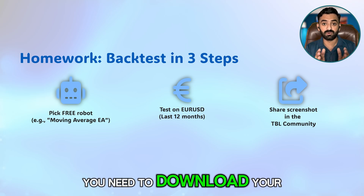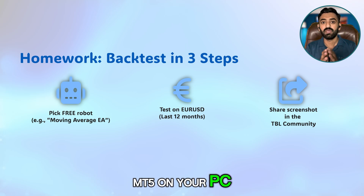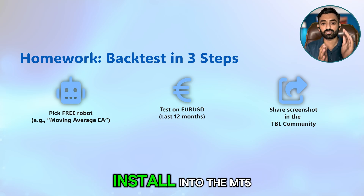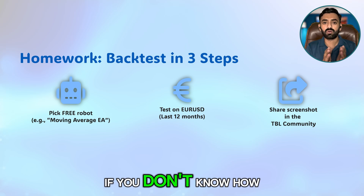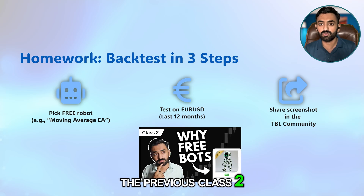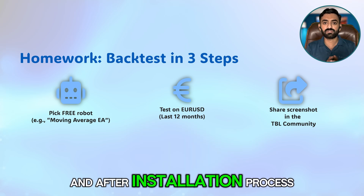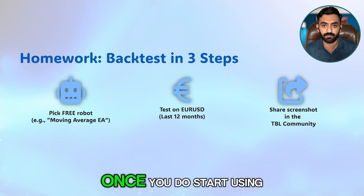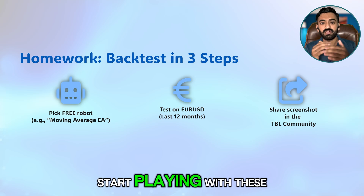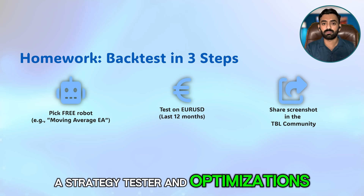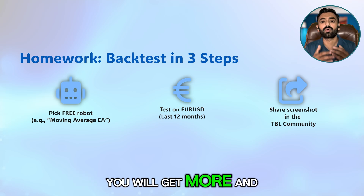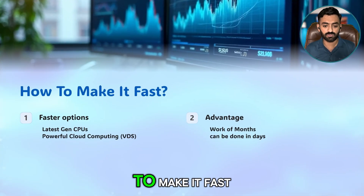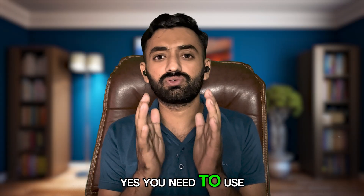Your homework: download MT5 on your PC, go to the MQL5 marketplace to find a free robot, and install it into MT5. If you don't know how to install, watch the previous class. After installation, play with the Strategy Tester. Once you start experimenting with the Strategy Tester, optimizations, and robots, you'll gain more and more experience.